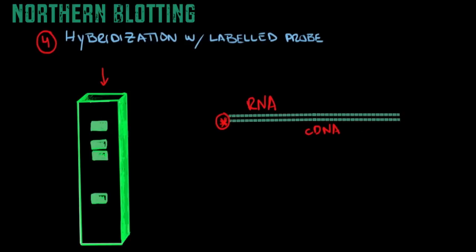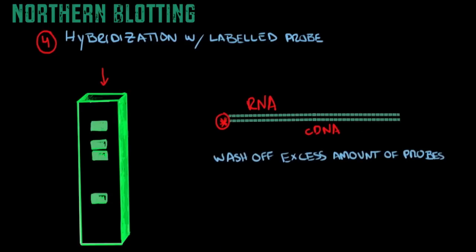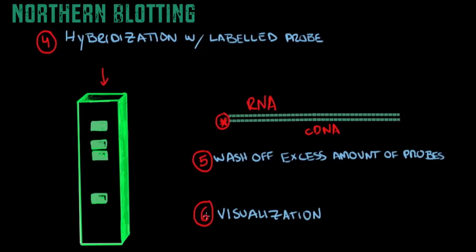Step five is to wash off the excess probes so they don't interfere with the final step. Step six is visualization, done through autoradiography, which allows us to determine exactly which of the bands contains the RNA molecules we've been trying to detect — for example, finding them in the third band.